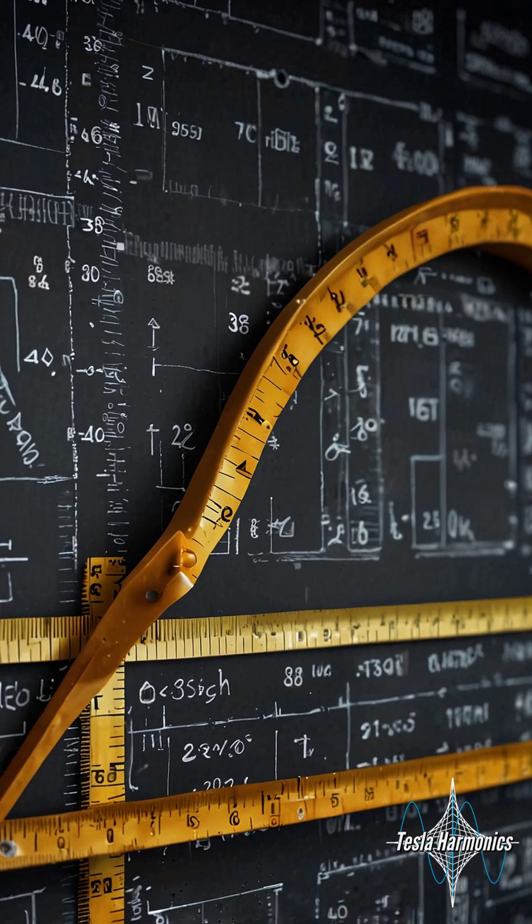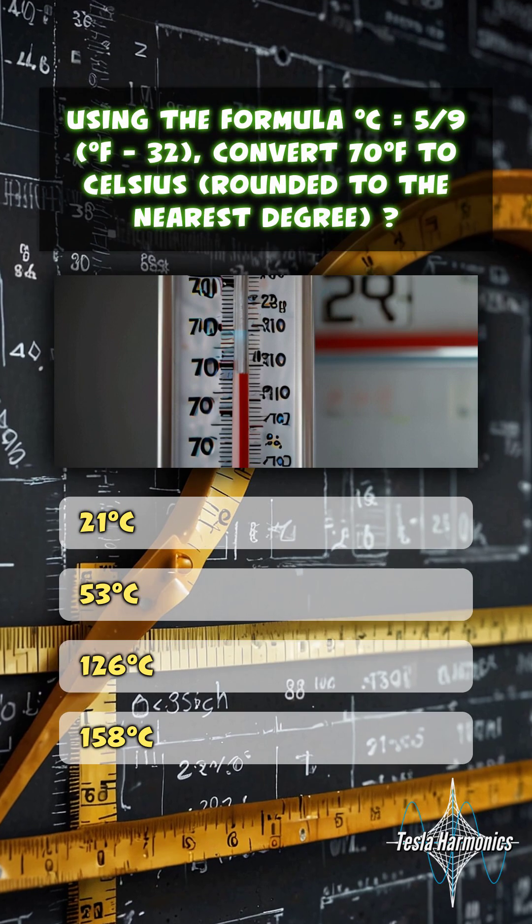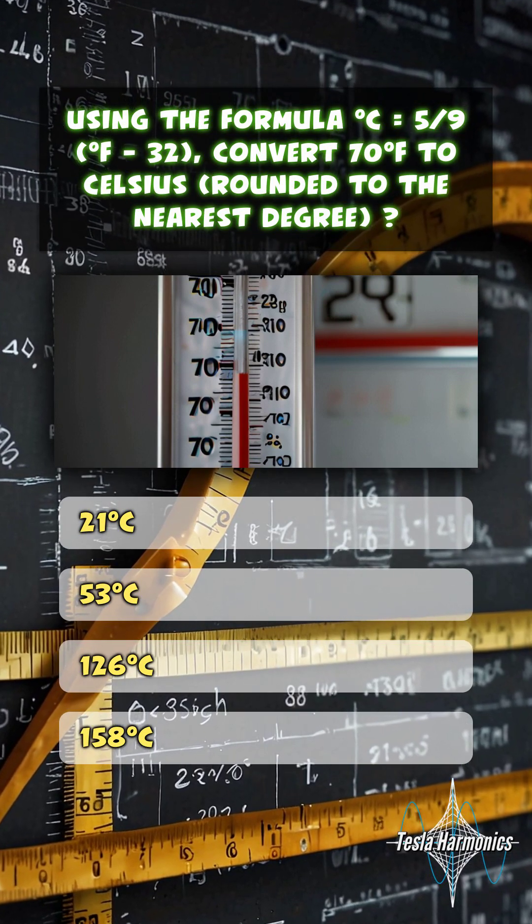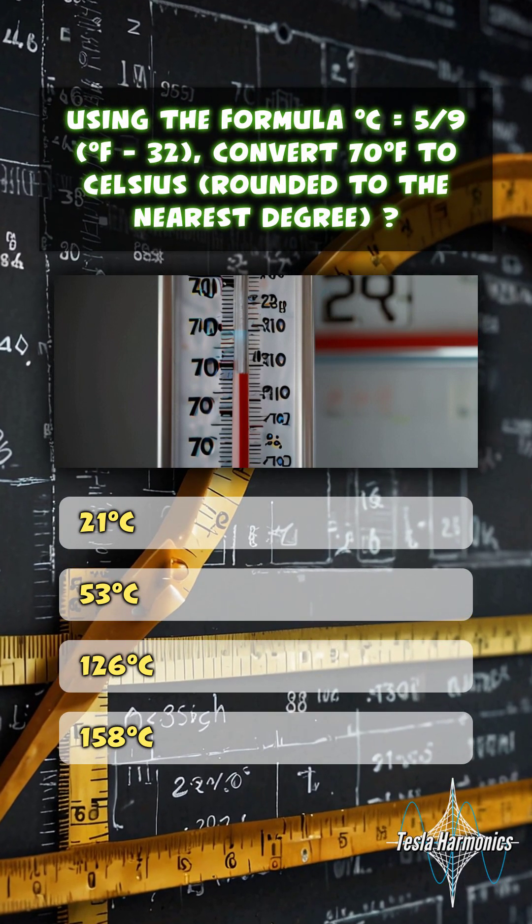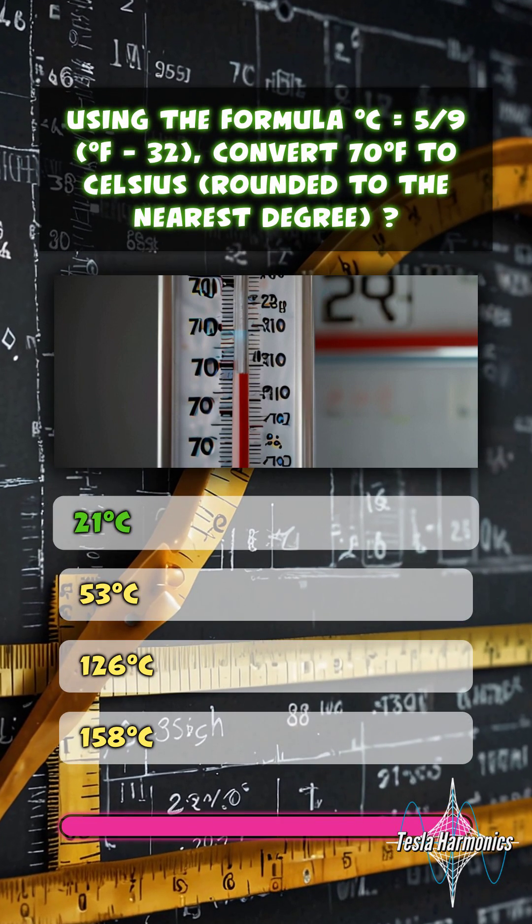180 degrees. Using the formula °C = 5/9(°F - 32), convert 70 degrees Fahrenheit to Celsius rounded to the nearest degree: 21 degrees Celsius.